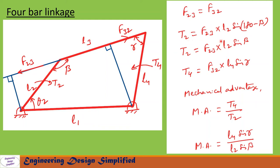Taking moments about this point: T2 equals F23 times l2·sin(180 minus beta), and since sin(180 minus beta) equals sin(beta), T2 equals F23·l2·sin(beta). For the other side of the linkage, T4 is acting in its direction. Drawing a perpendicular — this angle is gamma — so this distance becomes l4·sin(gamma). Taking moments: T4 equals F32·l4·sin(gamma). Therefore, mechanical advantage MA equals T4 divided by T2, which gives MA = l4·sin(gamma) / l2·sin(beta).